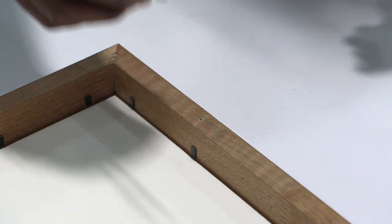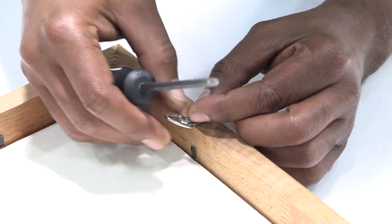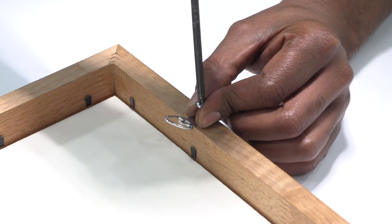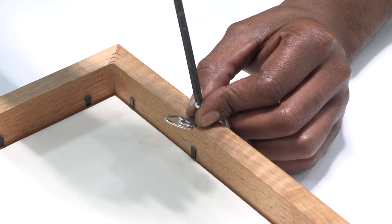For a wood frame, use a Phillips head screwdriver. Attach the wire hooks to the back of the frame using the screws provided. Standard hook placement is about one-third of the height of the frame from the top.